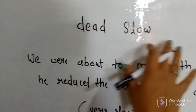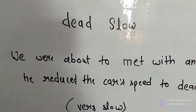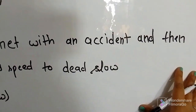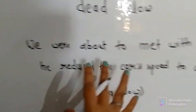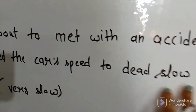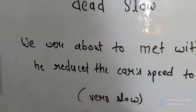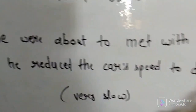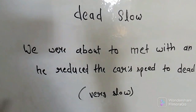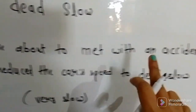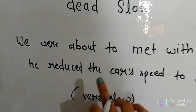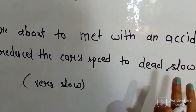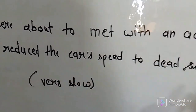The next is 'dead slow.' Look at this example: 'We were about to meet with an accident and then he reduced the car speed to dead slow.' So it means he reduced the car speed to very slow. That is the meaning of dead slow.